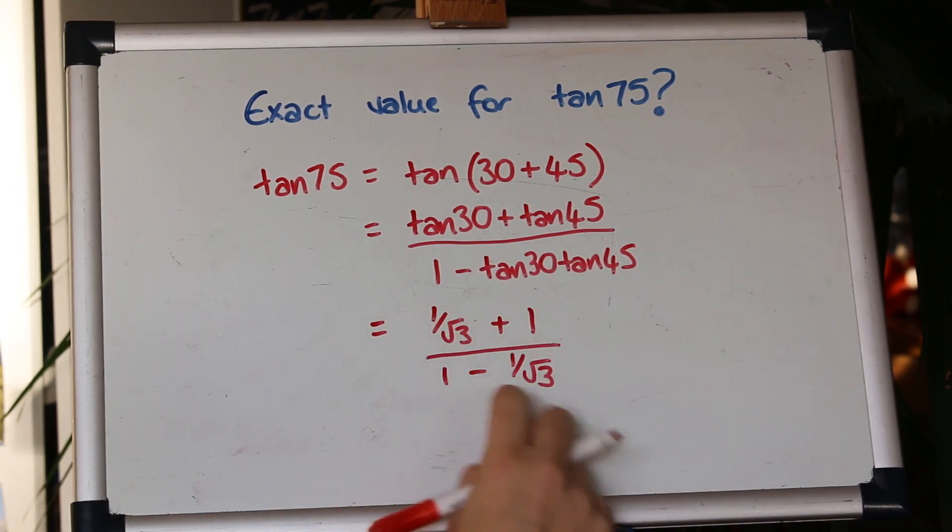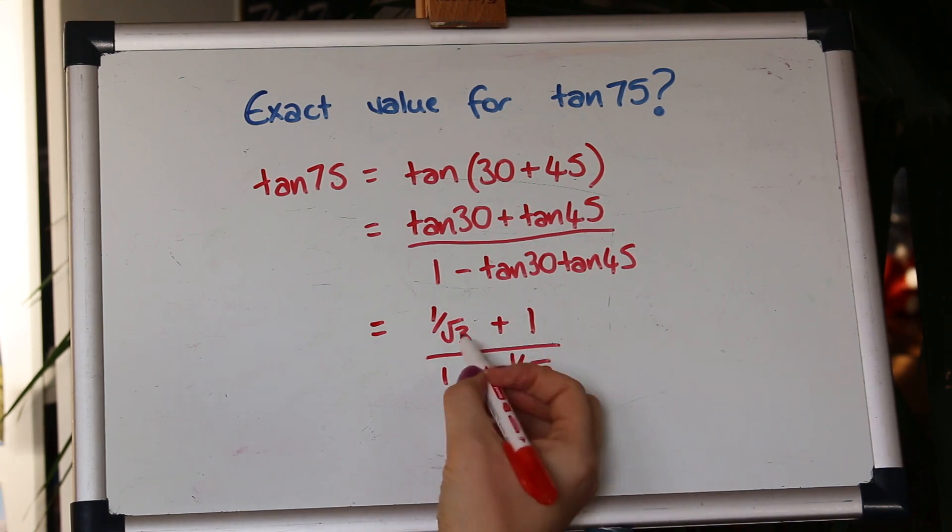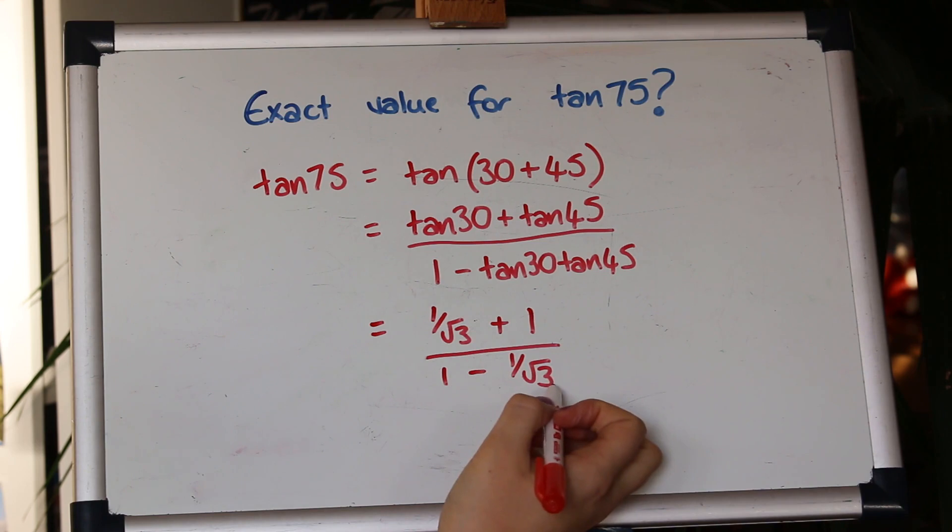To simplify this fraction here I don't like fractions within fractions so I'm going to multiply by the denominator to clear that up so I'm going to multiply top and bottom by root 3.